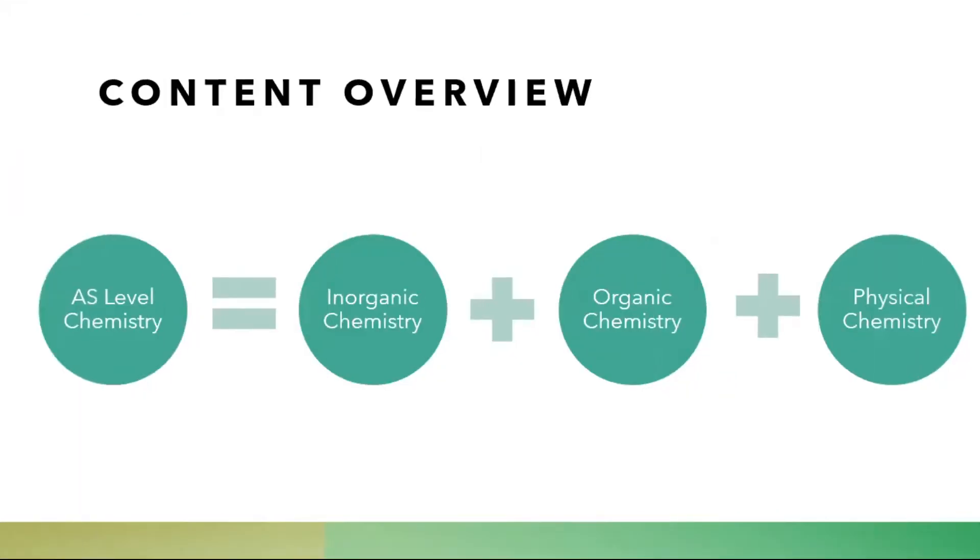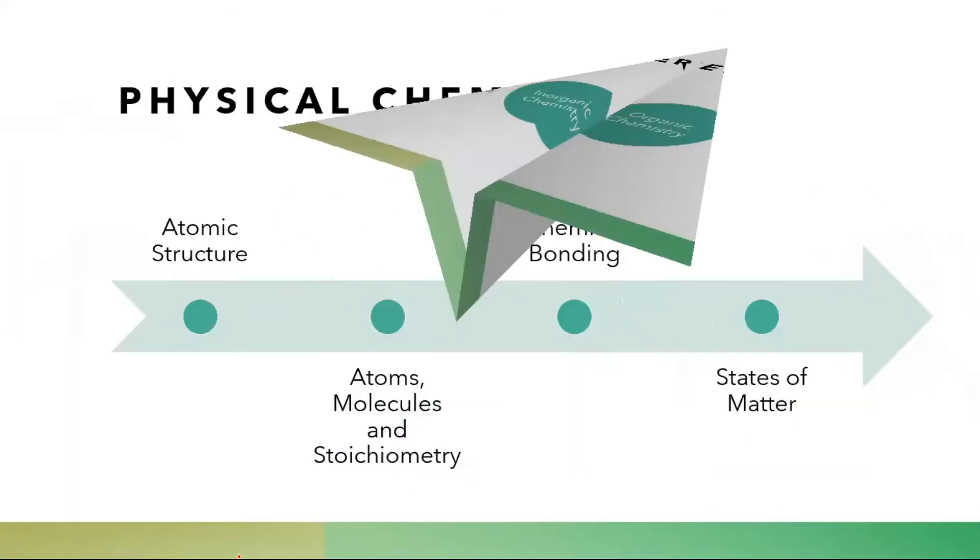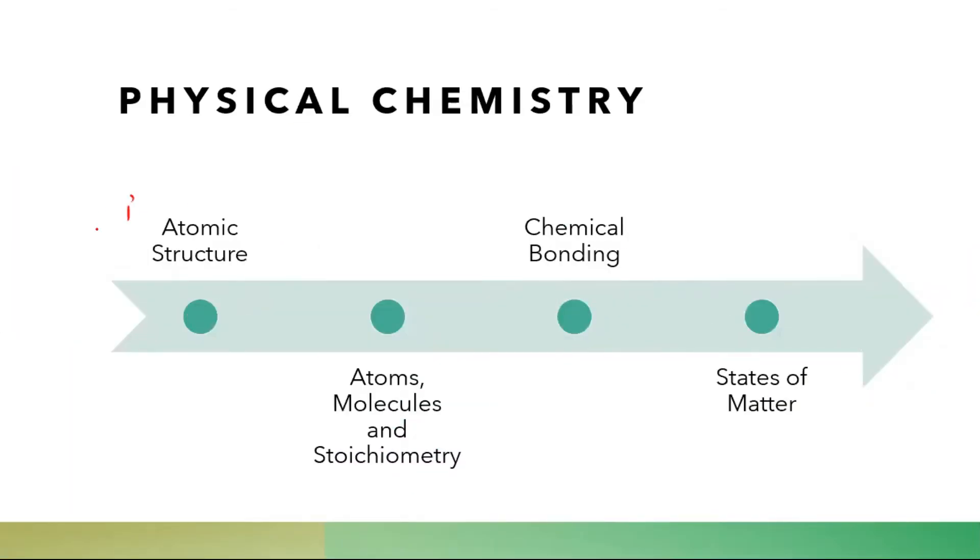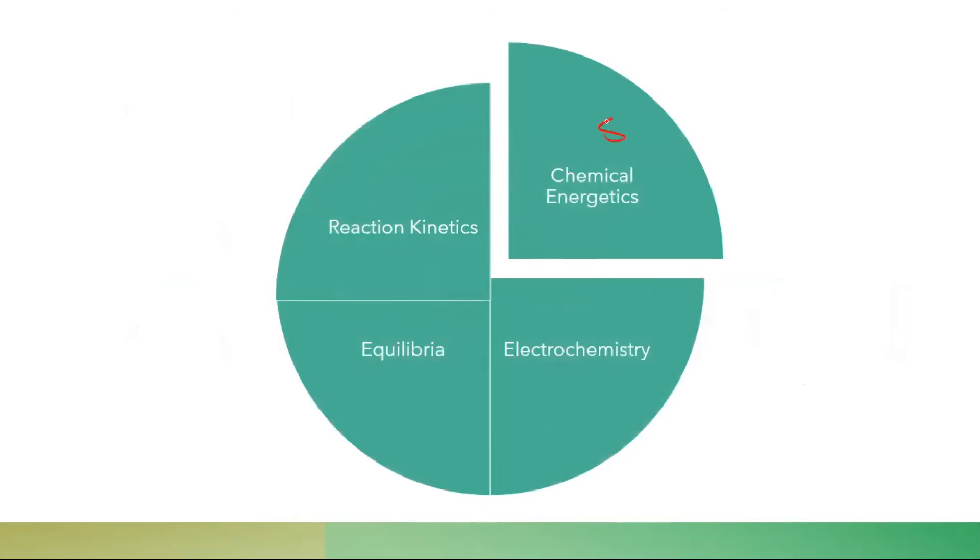Now let's look at the syllabus content overview. We call it AS level chemistry. There are three contents: Inorganic chemistry, Organic chemistry, and Physical chemistry. Physical chemistry has Atomic structure, Atoms and Stoichiometry, Chemical bonding, then the States of Matter. Then you have Chemical Energetics, Electrochemistry, Equilibria, and it is also with Reaction Kinetics.